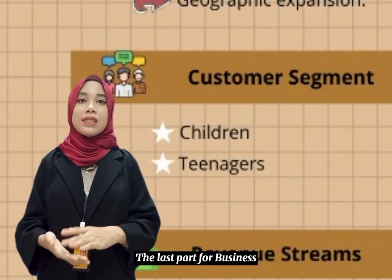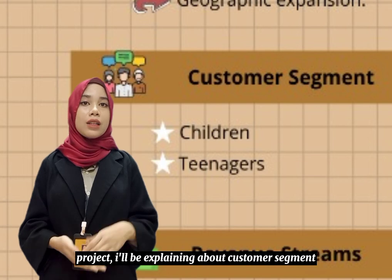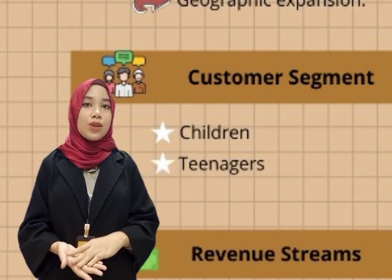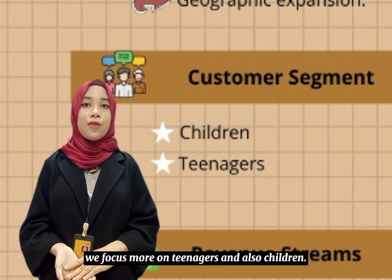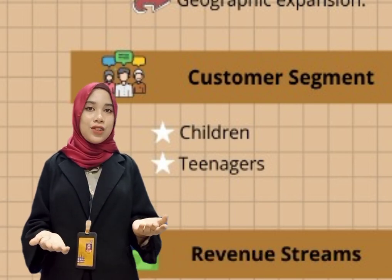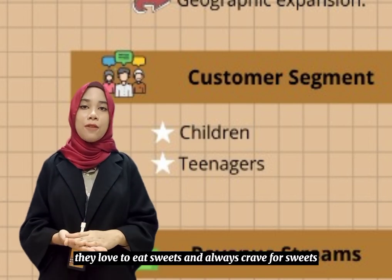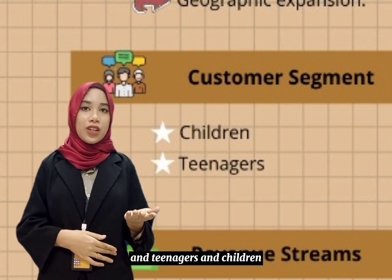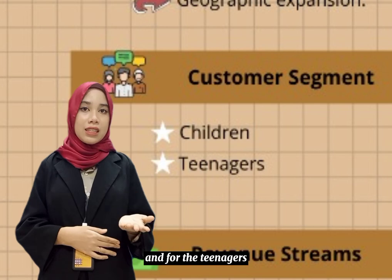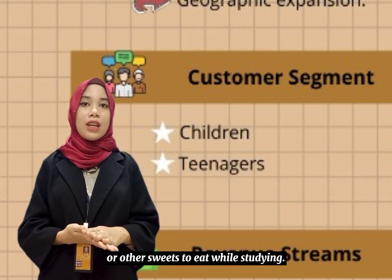The last part of the business model canvas covers customer segments, cost structure and revenue streams. For our customer segments, we focus more on teenagers and children. This is because this age group loves to eat sweets and always craves for sweets — they always buy sweets for snacks. Teenagers also buy cookies or other sweets to eat while studying.